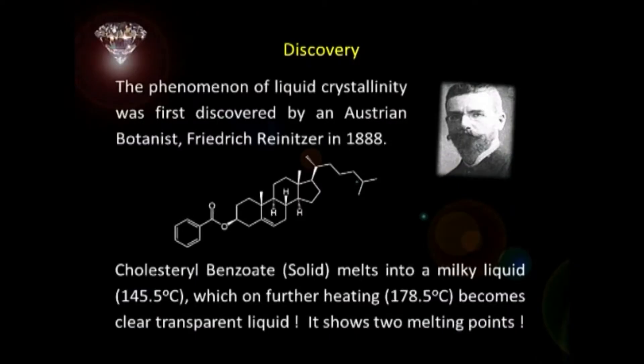Generally, if you have a compound and want to check the purity of it, we take the melting point. We know that a pure solid gives us a sharp melting point. When trying to take the melting point of cholesterol benzoate, he observed that instead of melting, this solid gets converted into a milky liquid around 145 degrees centigrade, and remains in that state on further heating till about 178 degrees, at which it becomes a clear transparent liquid. In other words, it shows two melting points.